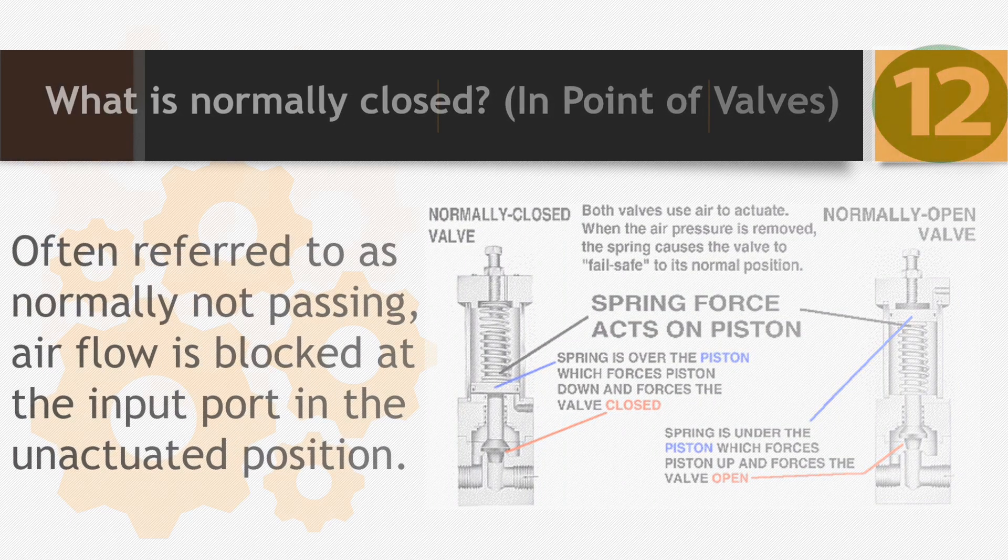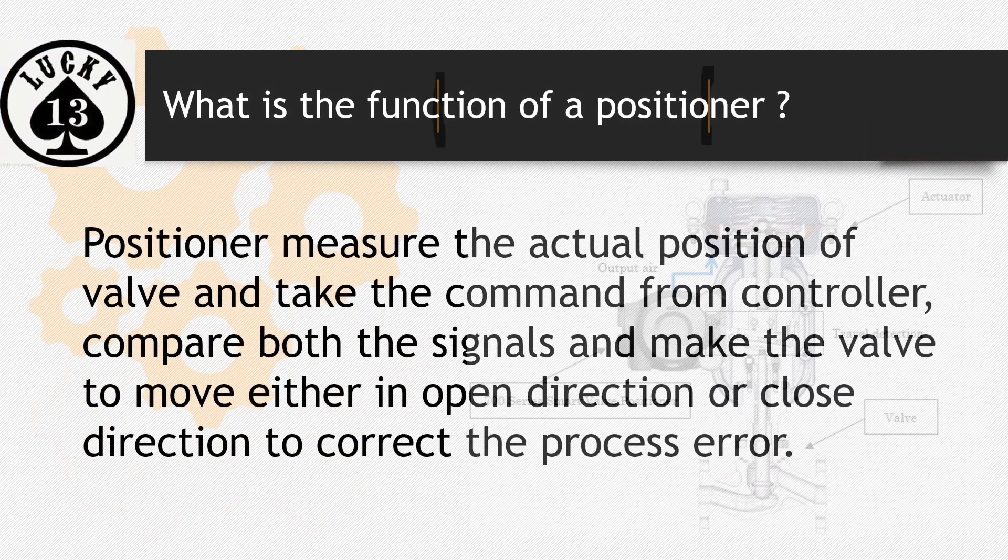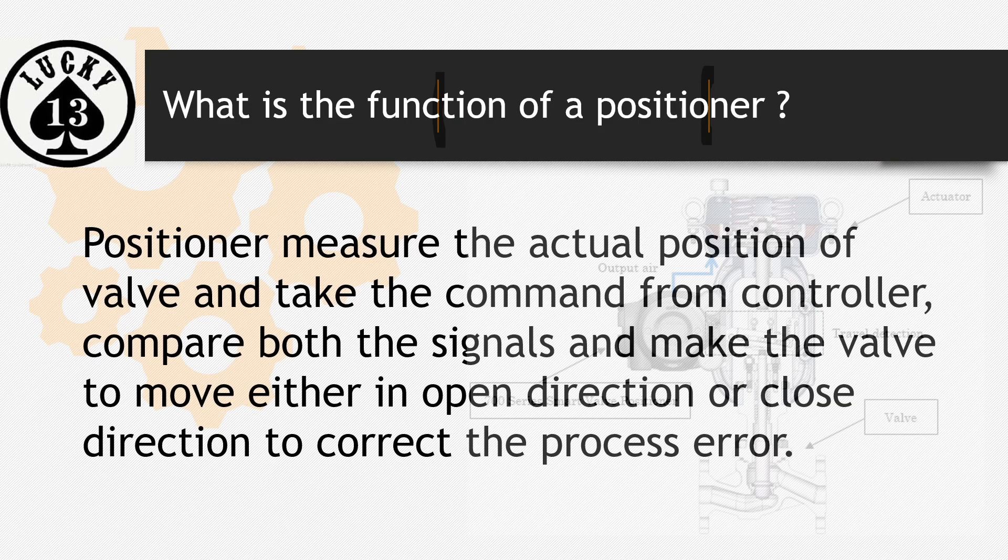Number 13: What is the function of a positioner? Positioner measures the actual position of the valve and takes the command from controller. It compares both signals and makes the valve move either in open direction or close direction to correct the process error.